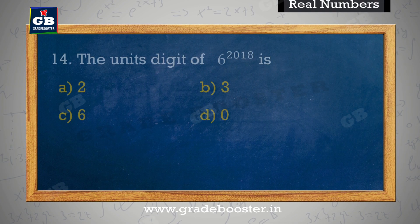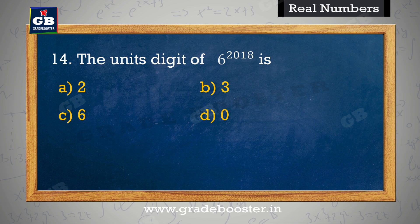The unit digit of 6 to the power 2018 is. 6 to the power 2018 ka unit ank hai. A. 2, B. 3, C. 6, D. 0.